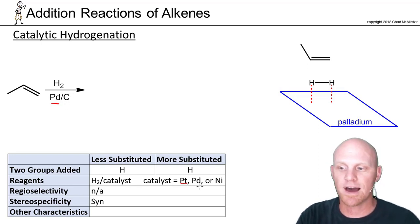But technically you can use platinum or nickel as well, and you should just treat them as being interchangeable. But in this case, we're going to add a hydrogen to both sides of the alkene. And since we're adding the same thing to both sides, there's no regioselectivity to talk about here.